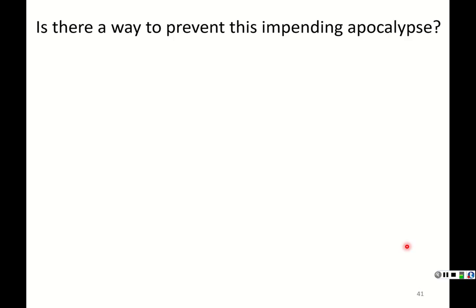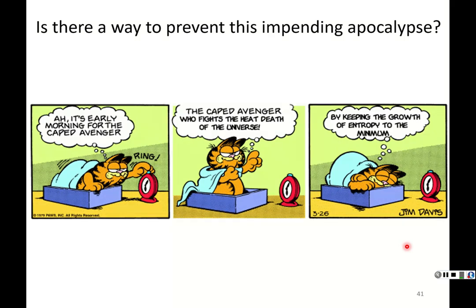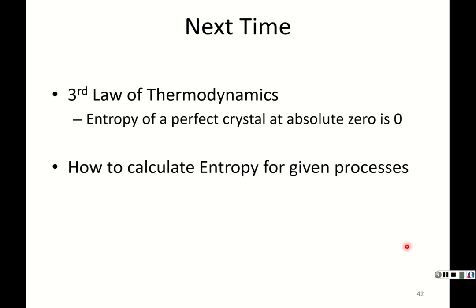Is there a way to prevent the pending apocalypse? Garfield has a theory: simply stay in bed to decrease the growth of entropy of the universe. Next time we'll talk about the third law of thermodynamics — the entropy of a perfect crystal at absolute zero is zero. What the third law gives us is the ability to calculate entropies for given processes, which we'll go through next time.